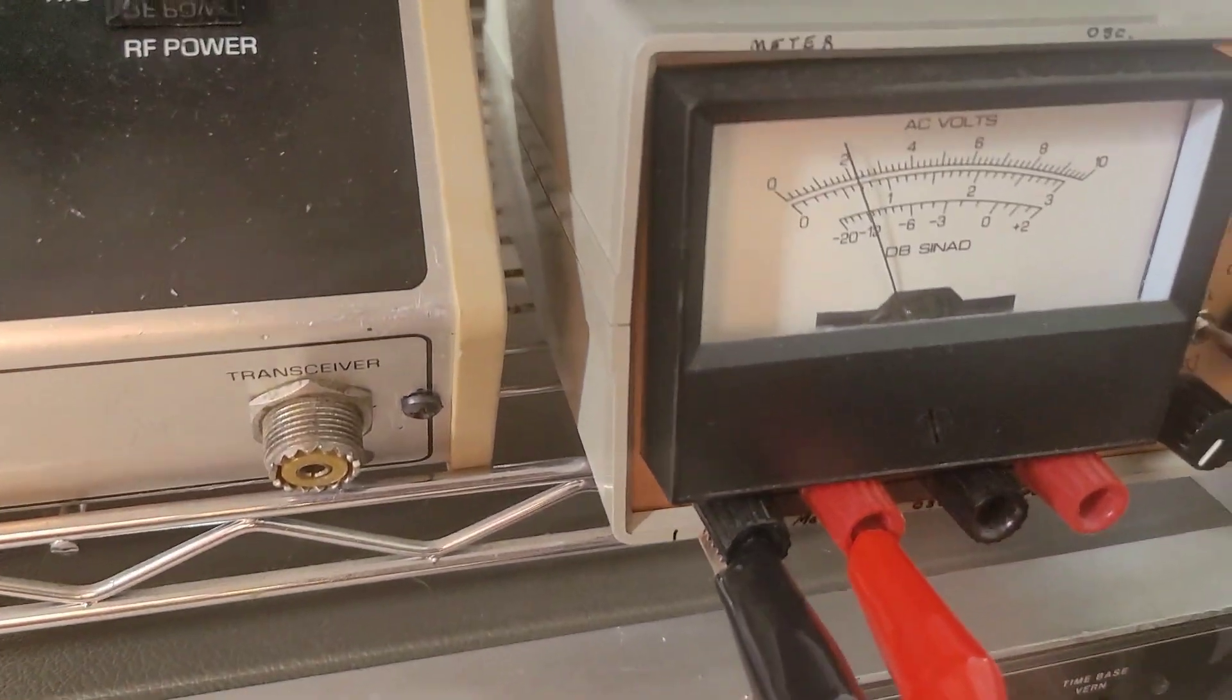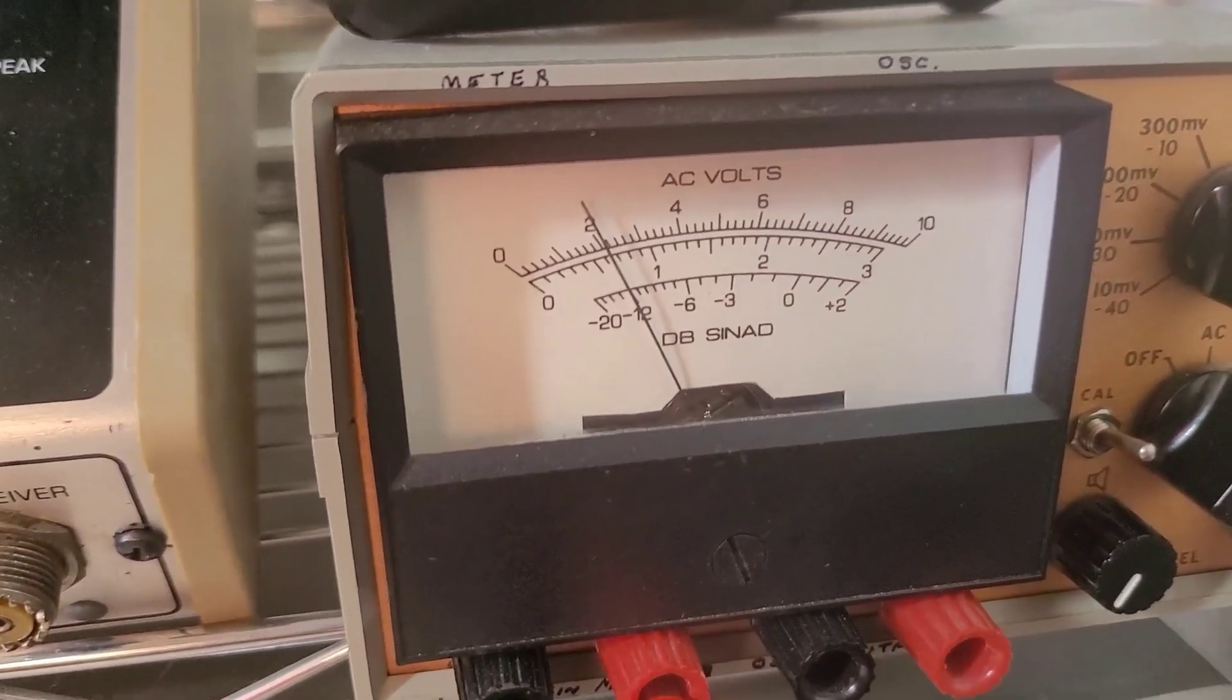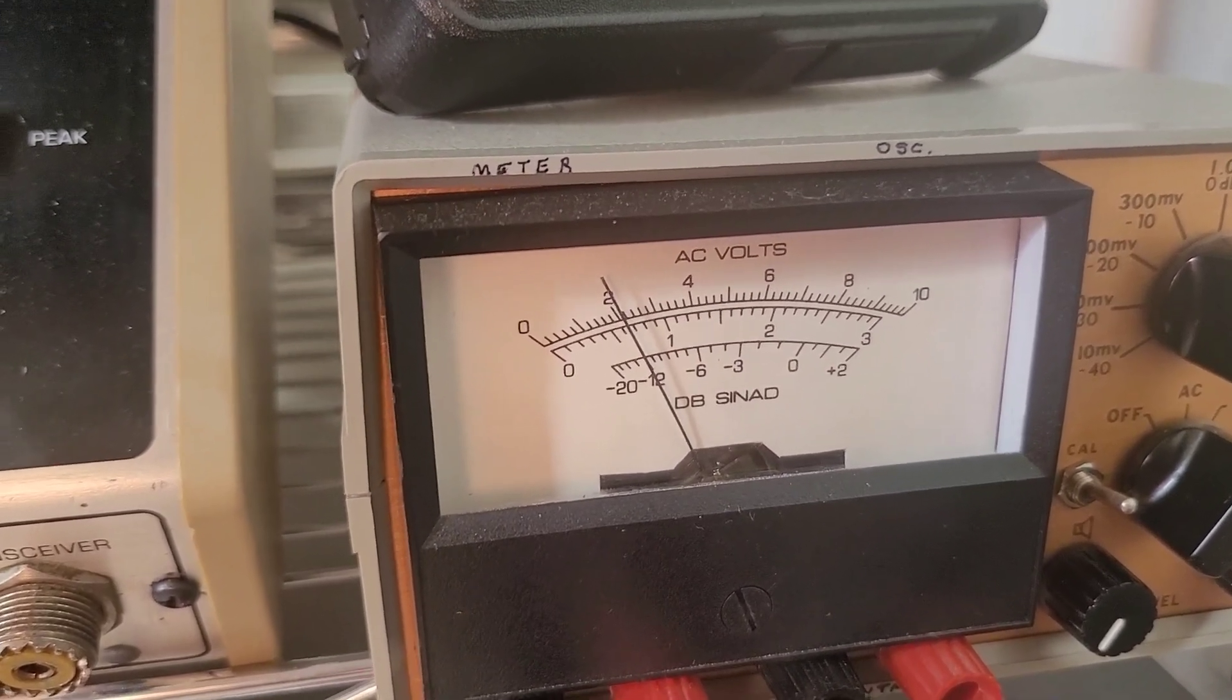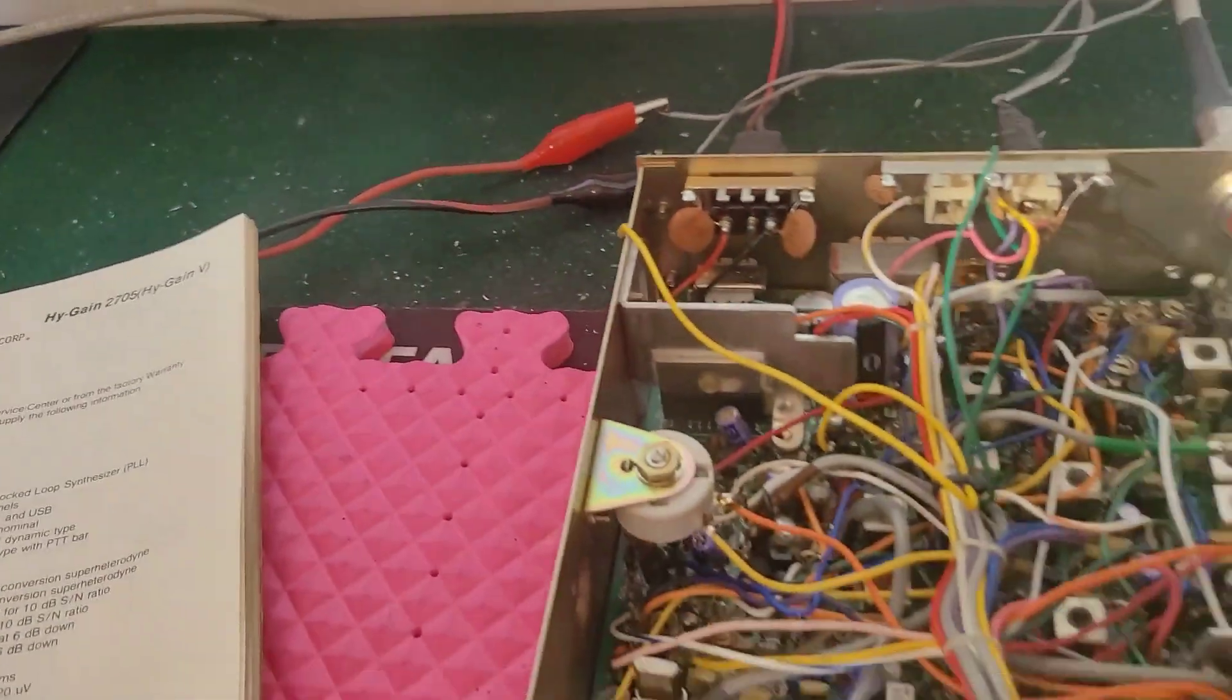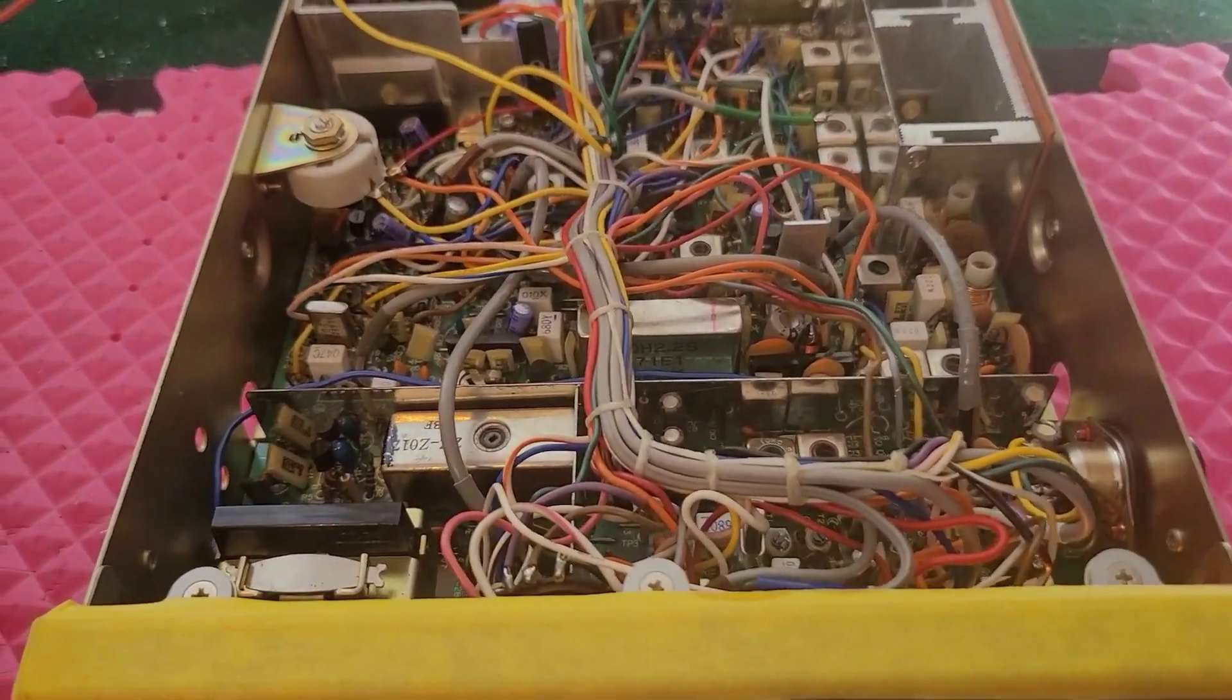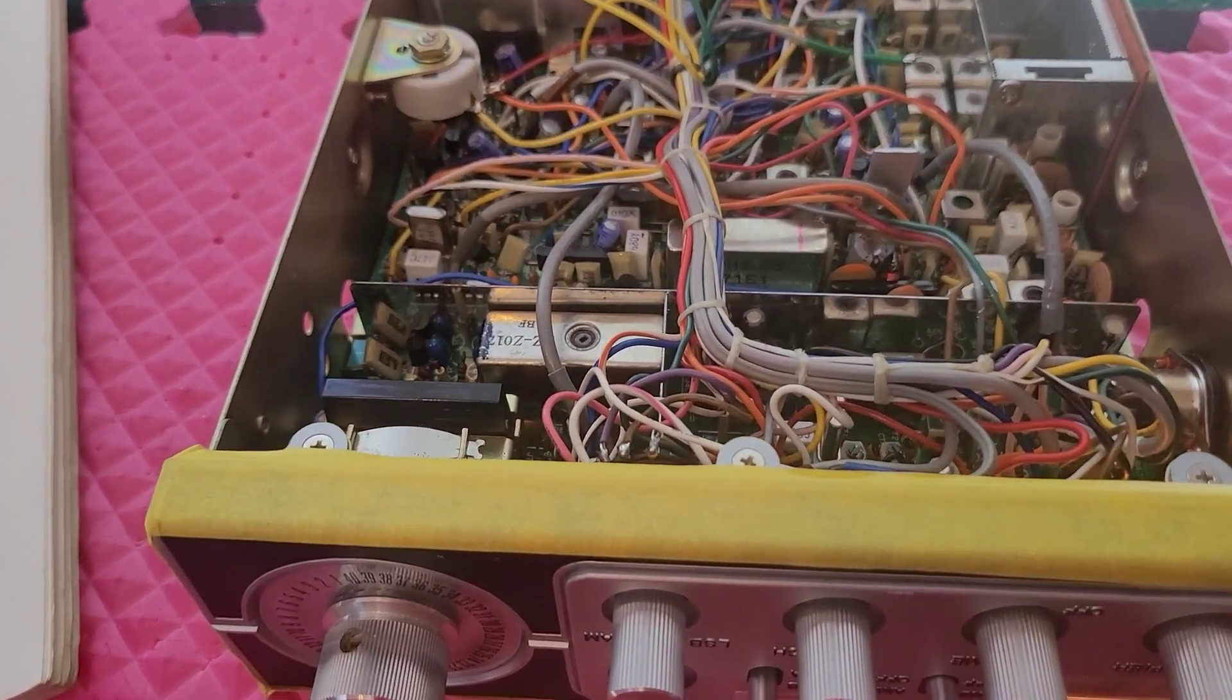To achieve 12 dB of SINAD, this radio needs to be fed minus 110 dBm signal with a 1000 hertz signal. That would be the SINAD of this radio right now.